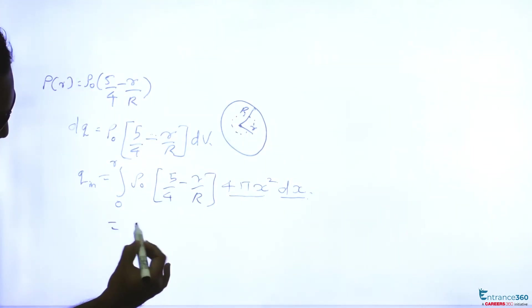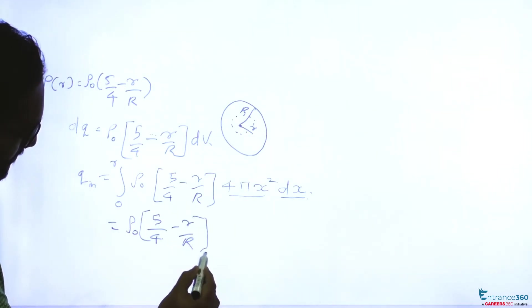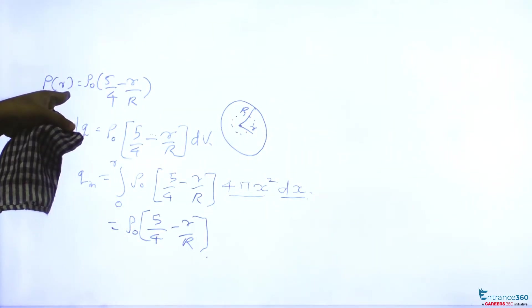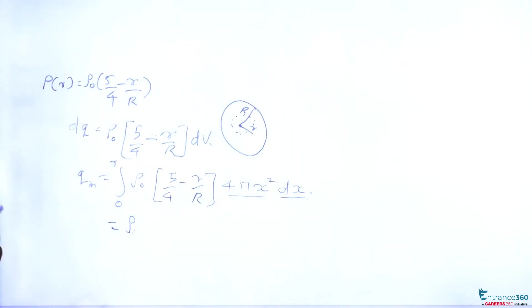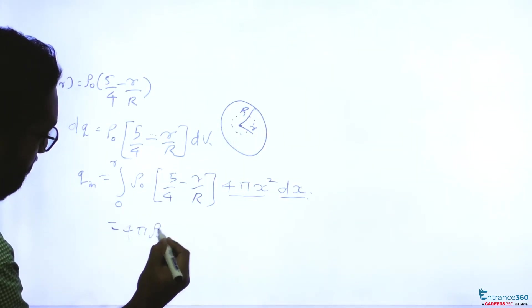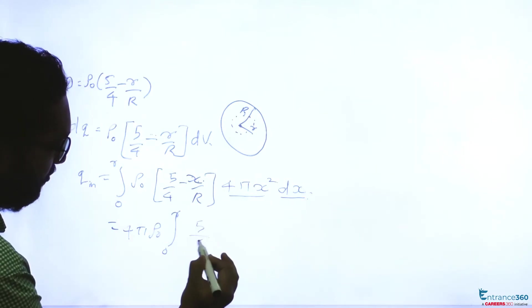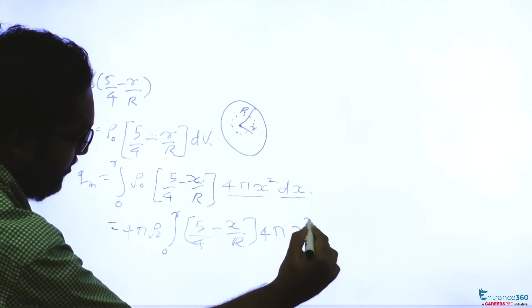So we can take the constants outside. See, this is changing as r changes. So our r is variable, so we cannot take this outside. So our density is changing, ρ₀ you can take outside, 4π we can take outside. 0 to r, this is changing according to the distance. So (5/4 - x/R) into x²dx.